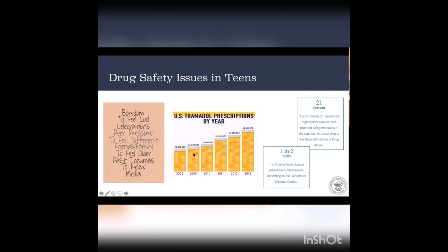There are many reasons why teens choose to do drugs — boredom, wanting to feel cool, peer pressure, access to medications through friends and family, past traumas, relaxation, and media influence. The Drug Enforcement Administration reported that in 2011, 2.6 million people ages 12 and older used tramadol for non-medical purposes, and tramadol prescriptions have increased over the past few years. According to the CDC, one in five teens abuse prescription medications, and approximately 21% of seniors in high school reported using marijuana in the past month.